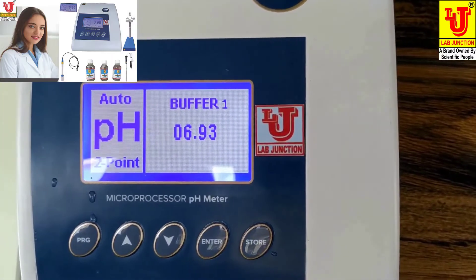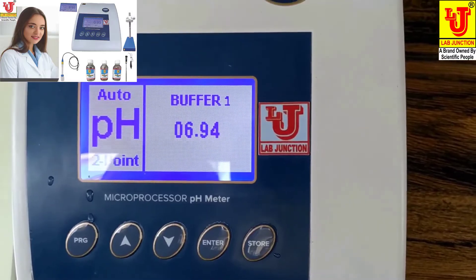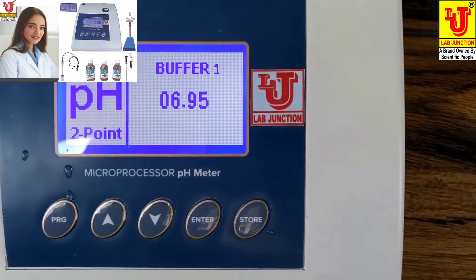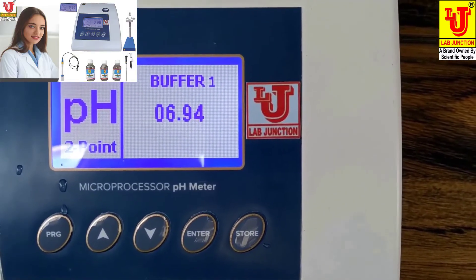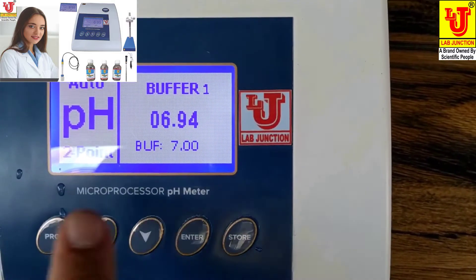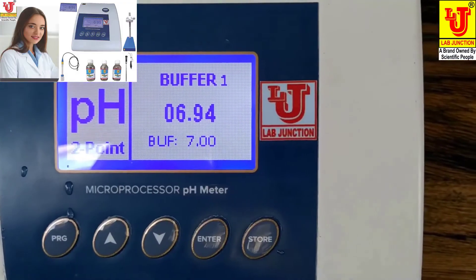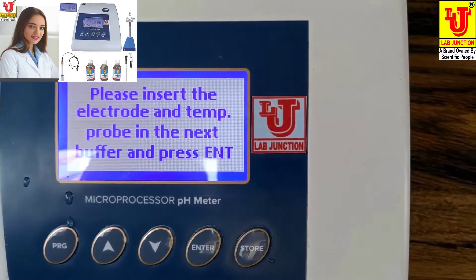Suppose it can achieve on 6.94. It is increasing, please wait for some time. You can press enter. It can calibrate buffer 7.00 automatically. You can press again enter.